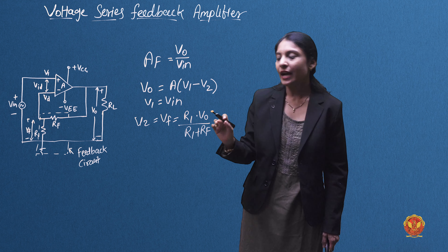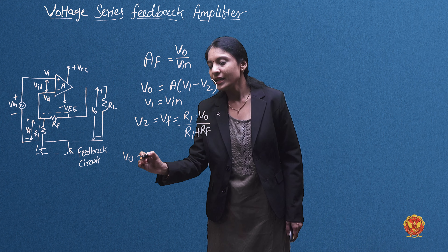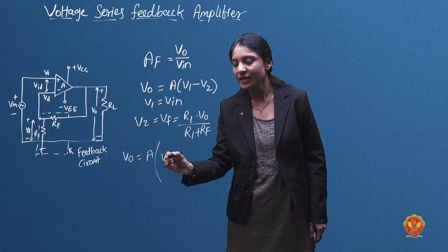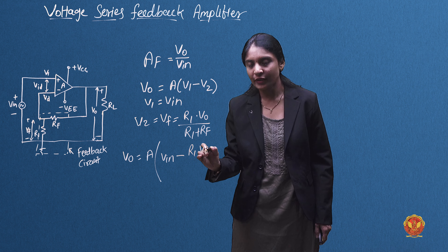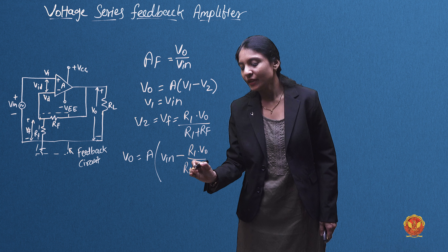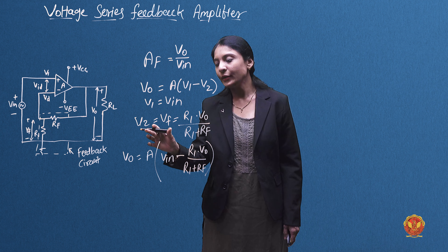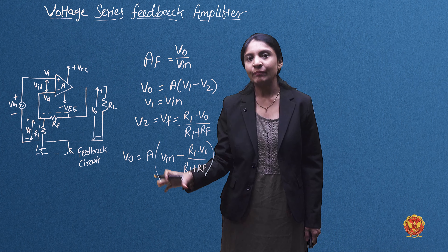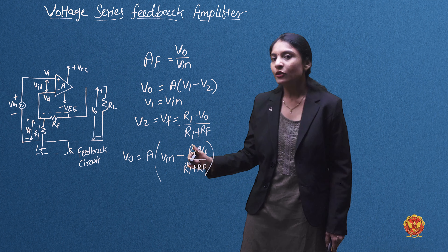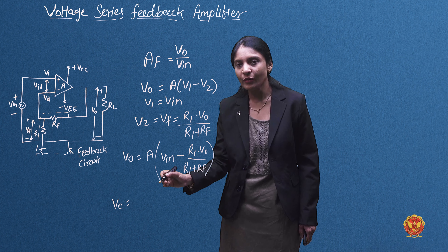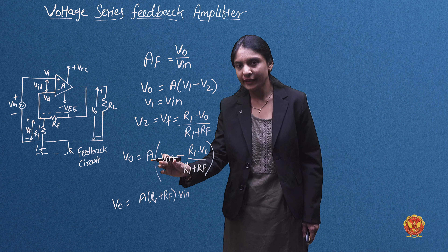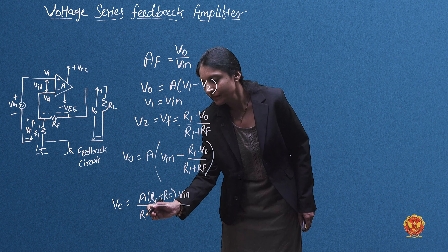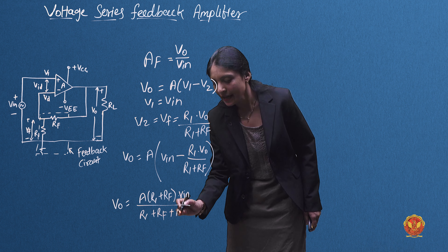Now V1 equals Vin and V2 equals R1 times Vout divided by R1 plus RF. We put these values of V1 and V2 into the output voltage equation. After rearrangement, output voltage V0 is equal to A into (R1 plus Rf) into Vin divided by R1 plus Rf plus AR1.